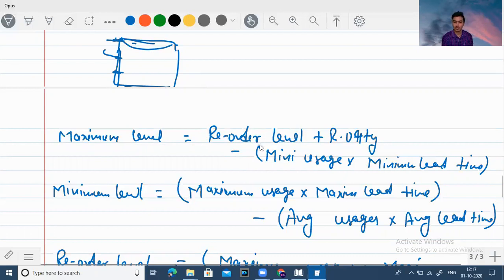So there are some formulas. You have to note down. Like maximum level. Reorder level plus reorder quantity minus minimum usage into minimum lead time.